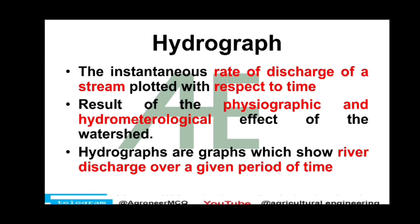The other term is Hydrograph. A Hydrograph is nothing but the instantaneous rate of discharge of a stream plotted with respect to time. In both Hytograph and Hydrograph, the plot is made against time — but in Hytograph there is rainfall intensity, and in Hydrograph there is discharge. Remember these two things. The result of the physiographic and hydrometeorological effects of the watershed is represented by a Hydrograph, which shows river discharge over a given period of time.